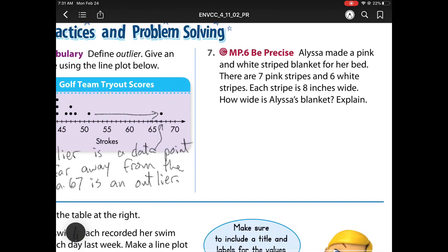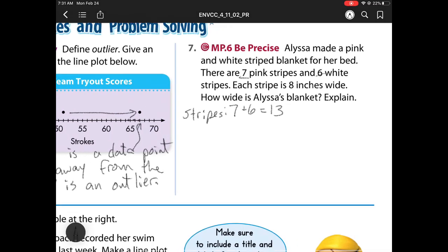Number 7. Alyssa made a pink and white striped blanket for her bed. There are 7 pink stripes and 6 white stripes. Each stripe is 8 inches long. How wide is Alyssa's blanket? My stripes are 7 pink plus 6 white. So total, I have 13 stripes. I have 13 groups because those are my stripes. And how big is each group? Each group is 8 inches long. So I have 13 times 8. Which when I regroup, I get 104. So how long is it? It's 104 inches.